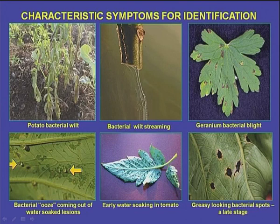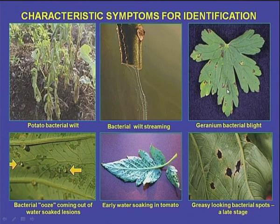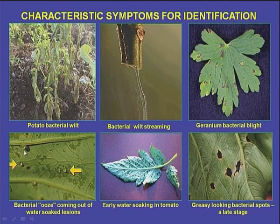This is the geranium bacterial blight — you can see the bacterial blight spots causing severe disease in the geranium, our ornamental plant. This is a very important slide I am showing you because this is a common thing we can observe in bacteria-affected plants: bacterial ooze in the shape of water droplets coming out from within water-soaked lesions affected with bacterial pathogens.